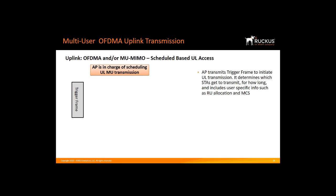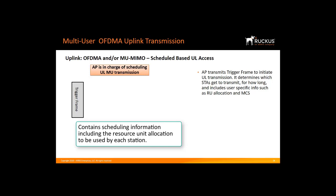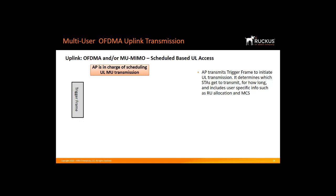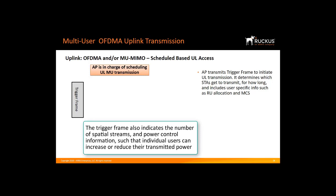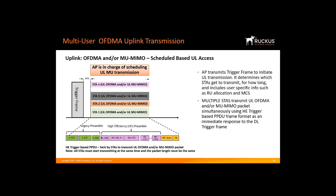In OFDMA, the uplink transmission is very different — it is a schedule-based transmission where the AP is in full control of the scheduling, maximizing uplink transmission efficiency. First, the AP transmits a control frame called a trigger frame to all users, which contains scheduling information including the resource unit allocation to be used by each station. The RU allocation information is communicated to the clients at both the PHY and MAC layers. The trigger frame also contains the number of spatial streams and power control information, so individual users can increase or reduce their transmitted power. In response, multiple stations transmit simultaneously to the AP using a high-efficiency trigger frame format. To prevent interference, the packets' transmission from each station must start and end at the same time, and remain synchronized in time, frequency, and power. Once the AP receives the packets from all the stations, it sends back an acknowledgement frame to finish the operation.